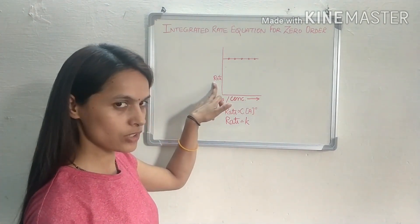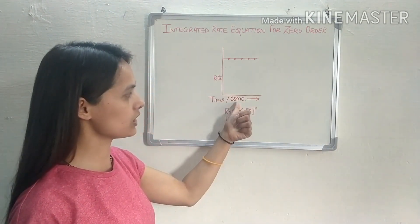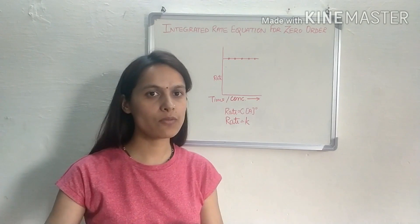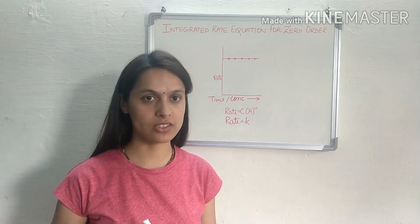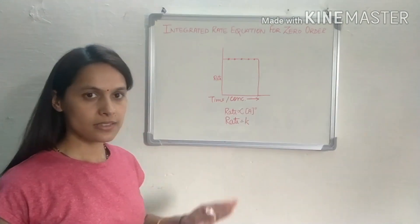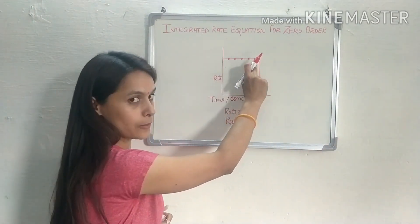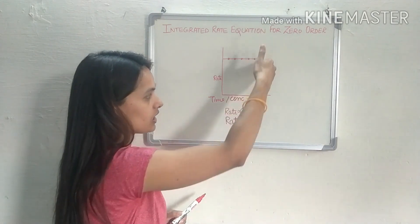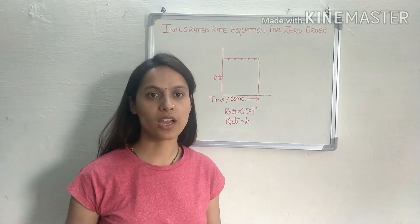When we plot a graph between rate of reaction for zero order with time, and rate of reaction for zero order with concentration, in both cases we get a linear graph, meaning the rate remains the same for zero order reaction. But when the reaction gets completed — as long as the reaction is proceeding the line is linear — and as soon as all the reactant gets converted into product, the graph drops down, because the rate of the reaction becomes zero as the concentration becomes zero.